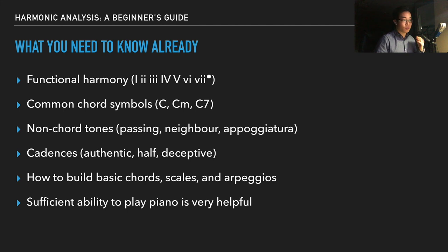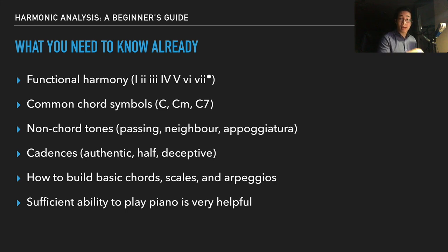Cadences — perfect or authentic, half, and deceptive cadences — are the most common ones. You also have plagal, which is IV to I. An authentic V-to-I feels like a period or exclamation mark. Half cadences open up the phrase, like I to V or IV to V. Deceptive is when you go from V to VI — we would expect V to go to I, but instead it goes to VI, leaving us away from home.